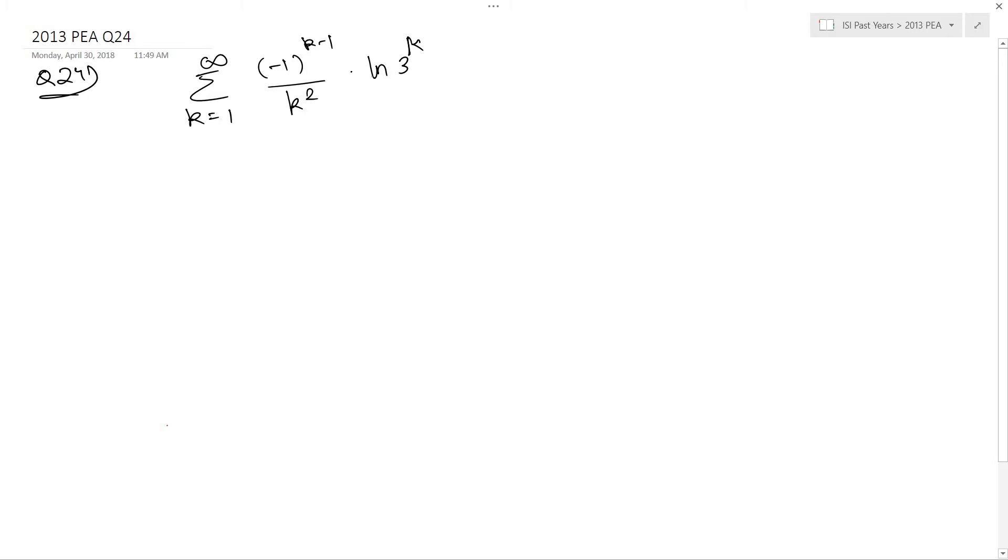Log to the base E is nothing but the natural log which is also represented as ln. You can take this k outside, which cancels with one of the k's. So this is simply summation k equals 1 to infinity, minus 1 to the power k minus 1 upon k into ln 3.